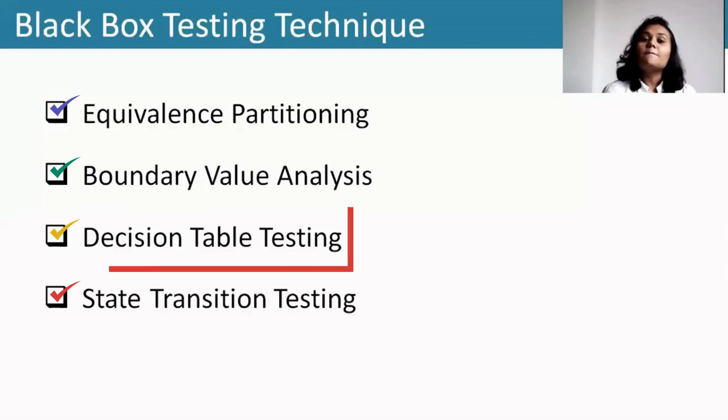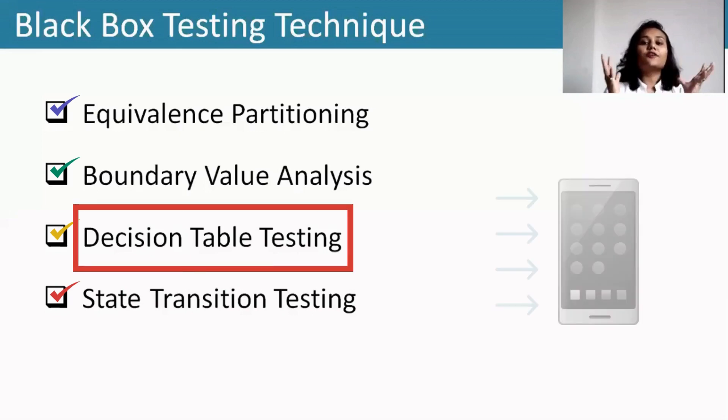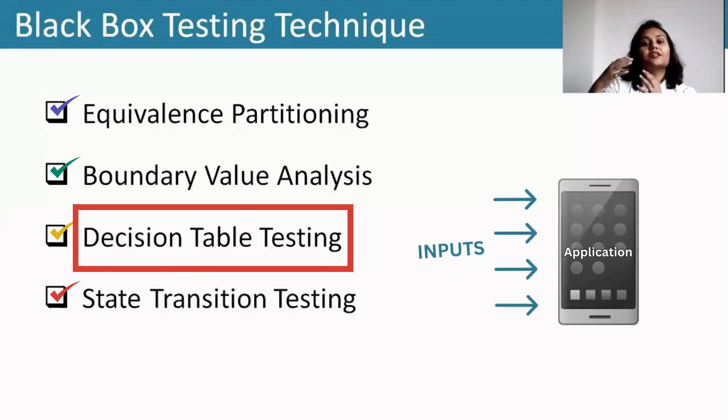Decision table testing is majorly used when you have different combinations of inputs and you have to make different cases of input, different combinations of input, and then you have to test your application.